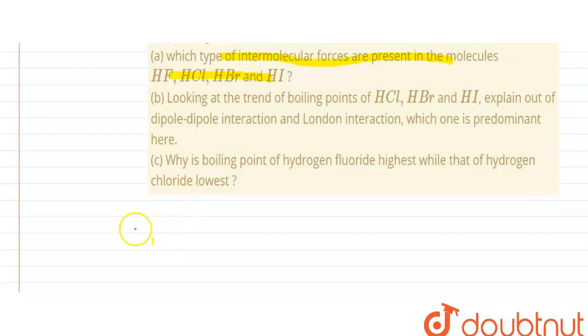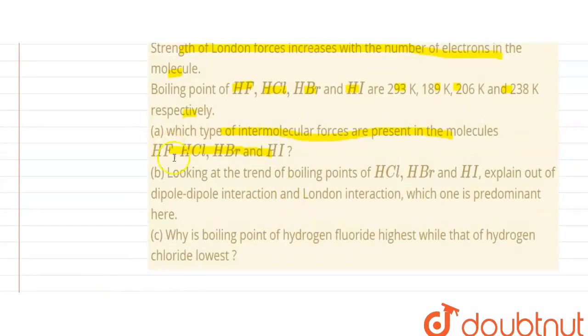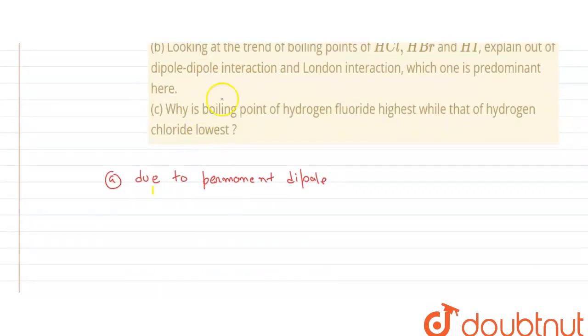Basically it is asking about intermolecular forces. So due to permanent dipole, these have very weak forces because there is a difference in electronegativity in all of them. Therefore a dipole is formed because of which we see London forces and dipole-dipole forces are present. So these are the intermolecular forces present in HCl, HBr and HI.